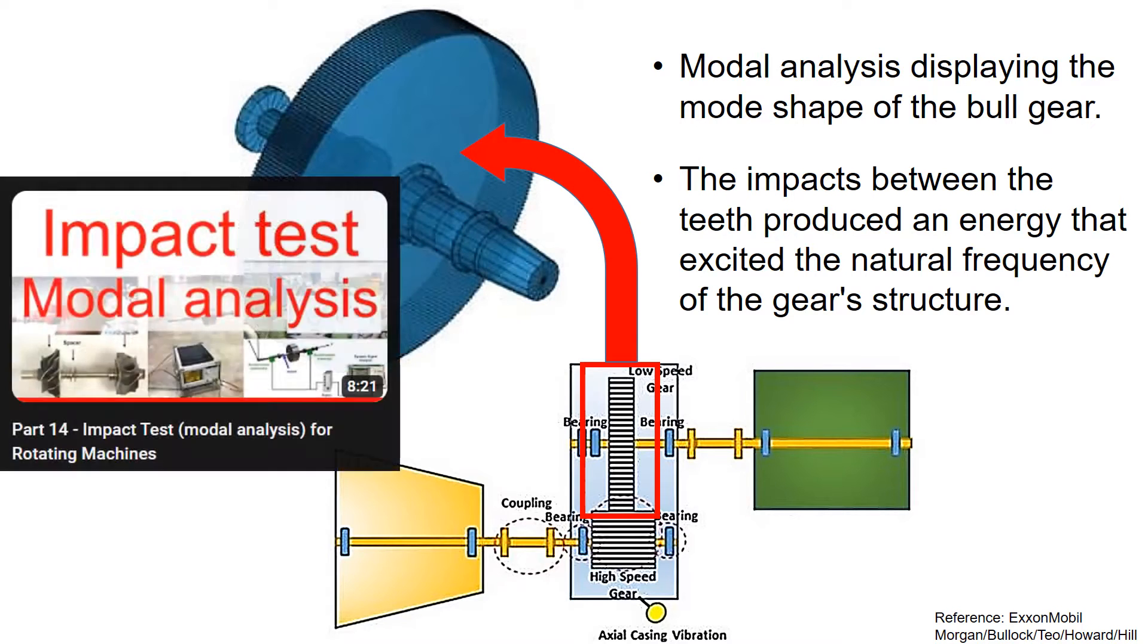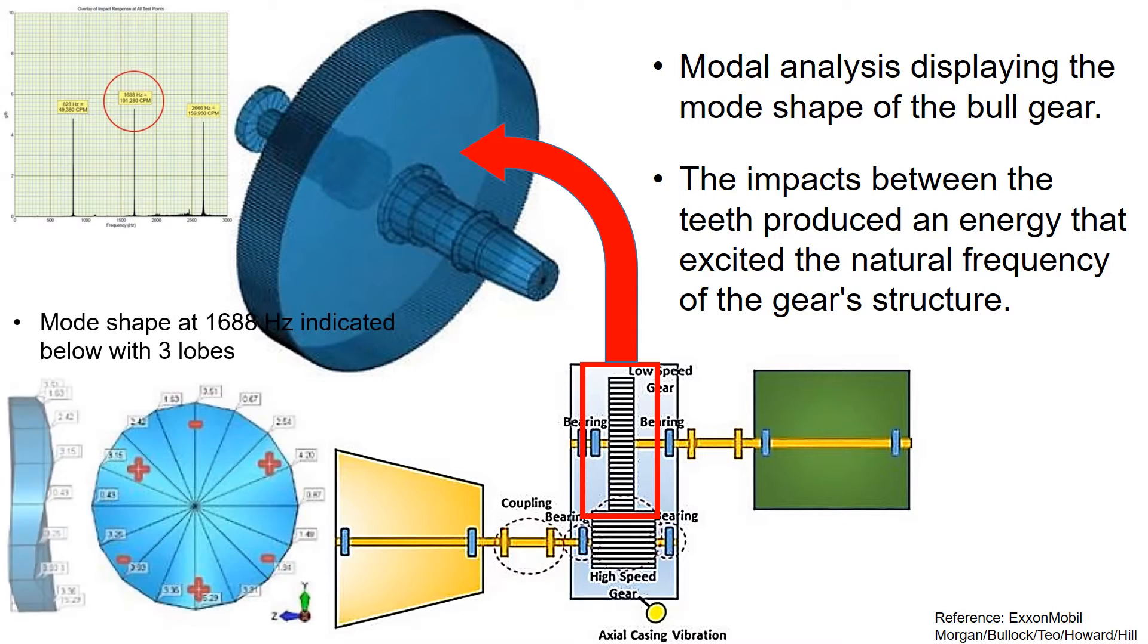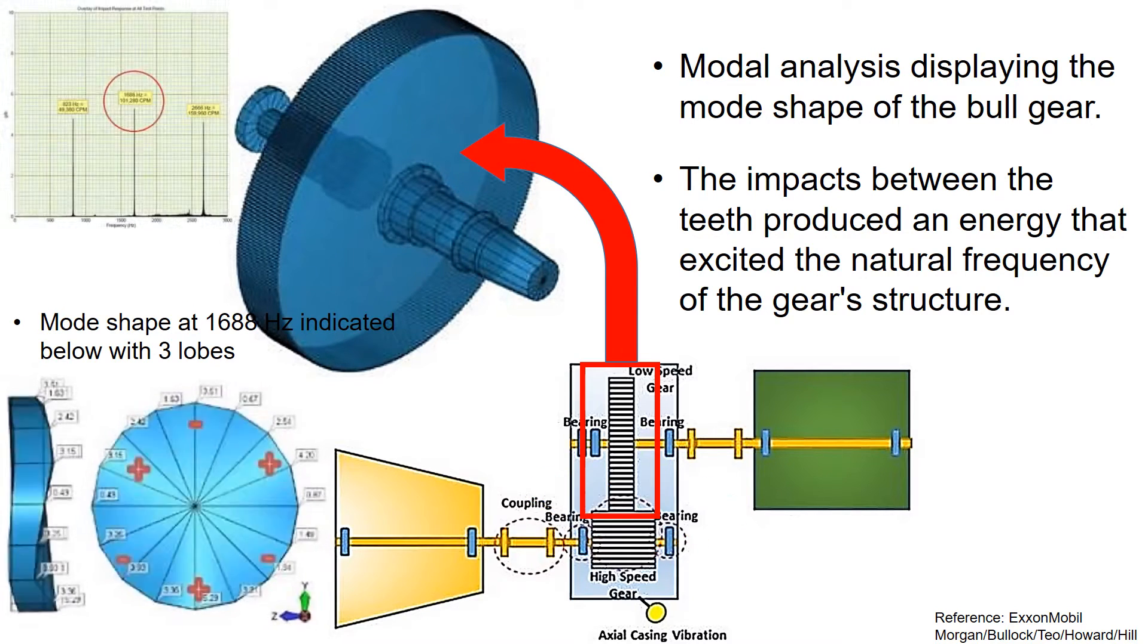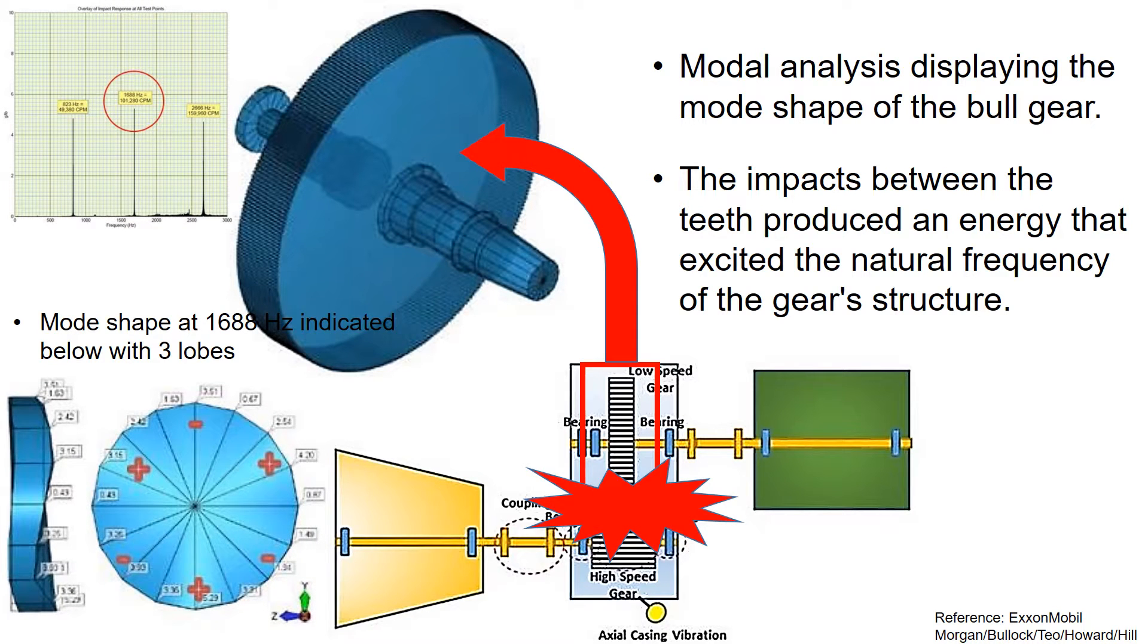To understand the root cause, motor analysis is performed as in the part 14 video. In left figures, motor analysis displays the mode shape of the bull gear. The impacts between the teeth produces an energy that excites the natural frequency of the gear's structure.